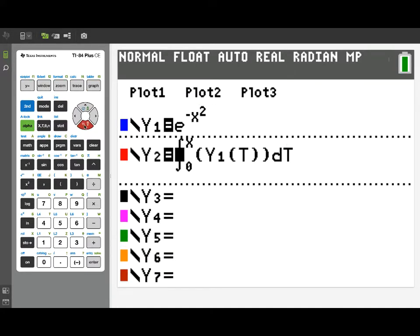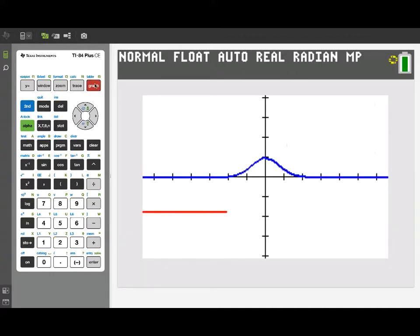Now suppose we took our definite integral function and we changed the lower limit of integration. The fundamental theorem of calculus would say we should still have an antiderivative. On the other hand, we know that two antiderivatives for the same function should only differ by a constant.